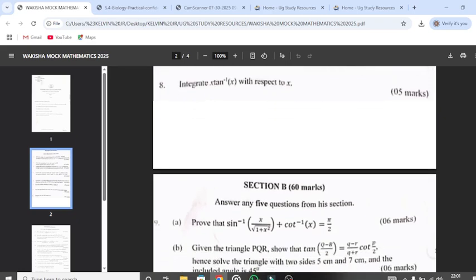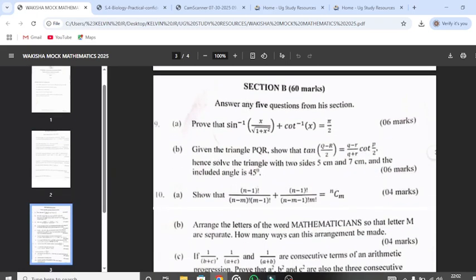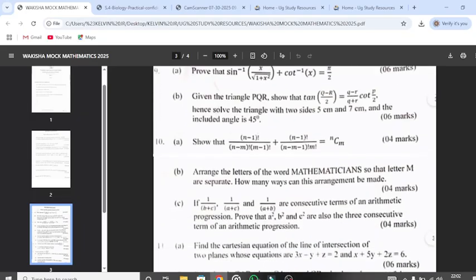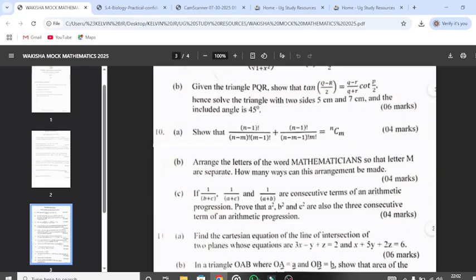As you can see, if we continue with section B, this is number nine, part A. This is trigonometry. As you can see, we continue with number 10. This is combination and permutation.